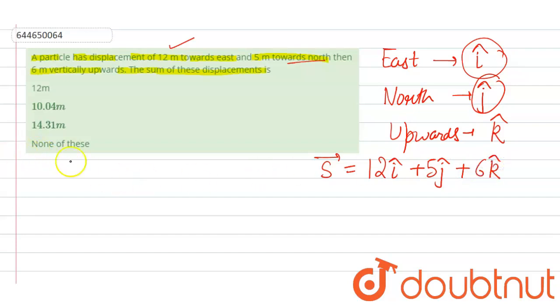We have to find the sum of these displacements, which means finding the magnitude. This can be found by taking the square root: √(12² + 5² + 6²).